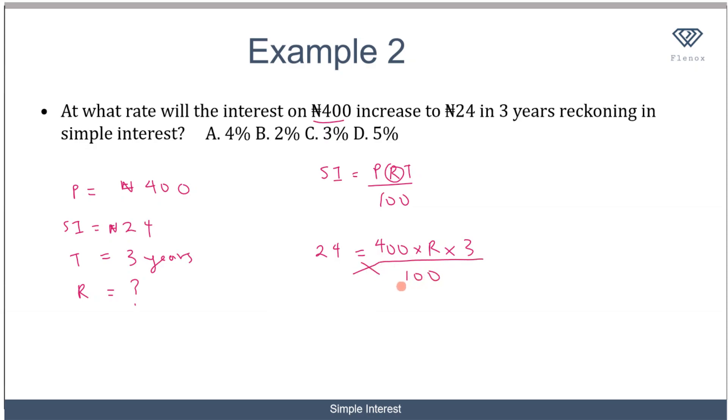If I cross multiply, then I have 400 times R times 3 equals 2,400. So 1,200R equals 2,400. If I divide both sides by 1,200, then I'm left with 2%.